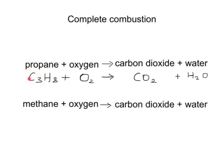On the left side of the equation we can see there are three carbons, but presently there is only one carbon on the right. So we need to put a number three in front of the carbon dioxide to show there are three carbons made. Similarly, there are eight hydrogens on the left-hand side but only two on the right-hand side, so we need to put a number four in front of the H2O to show there are eight hydrogens used up. That means on the right-hand side we have three lots of two — six oxygens — and four lots of one — four oxygens — making a total of ten oxygens. As they come in pairs on the left-hand side, we need five oxygen molecules to balance it.